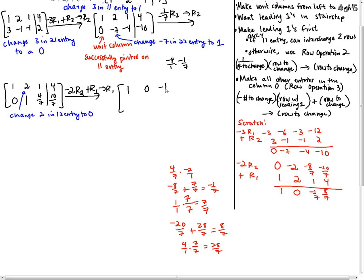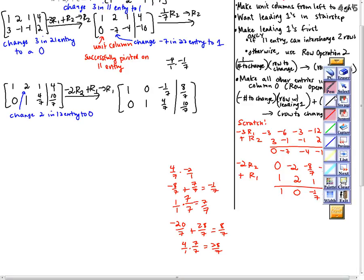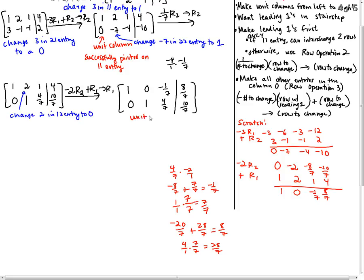That is my new row 1. 1, 0, negative 1 over 7, 8 over 7. Then I rewrote row 2. 0, 1, 4 over 7, 10 over 7. I have two unit columns now. I have one here, and I have one here. I successfully pivoted on the 2,2 entry. I made a unit column, and the 1 is in the 2,2 spot.